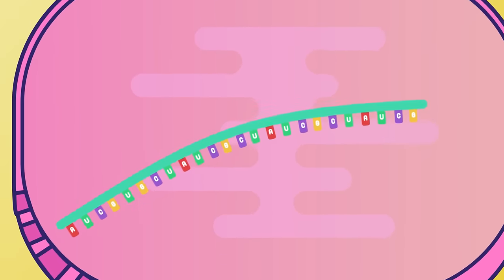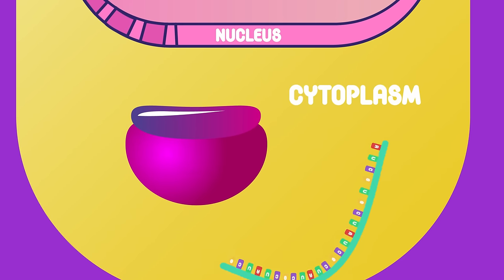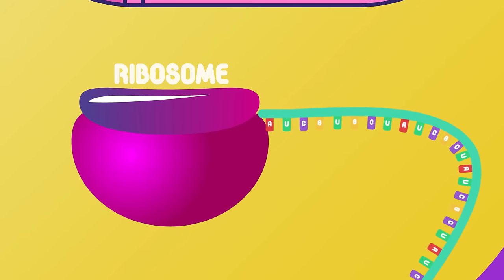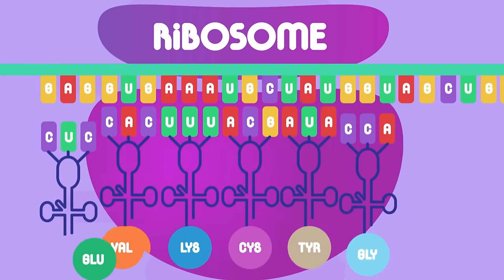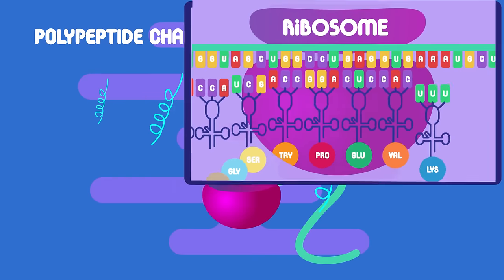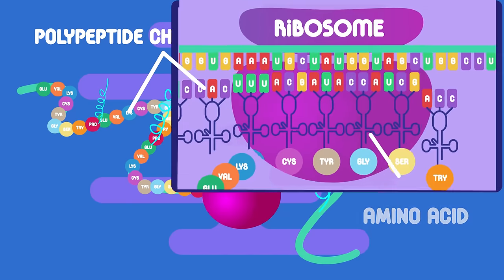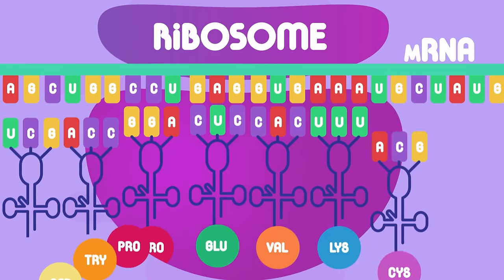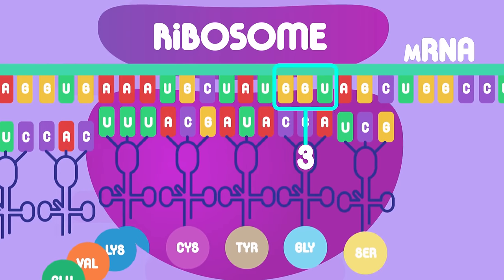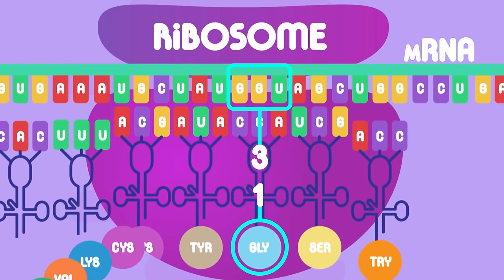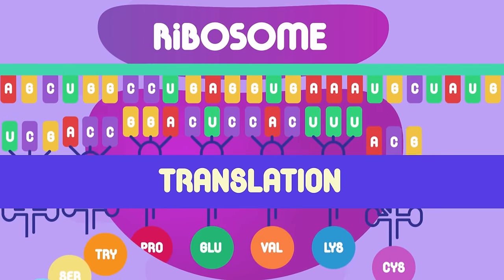The mRNA then travels from the cell nucleus out into the cytoplasm until it reaches and attaches to a ribosome. The ribosome then sticks amino acids together to make a polypeptide chain, following the order of amino acids as coded for by the mRNA. Three base codons on the mRNA code for one amino acid, and this whole process in the ribosome is called translation.